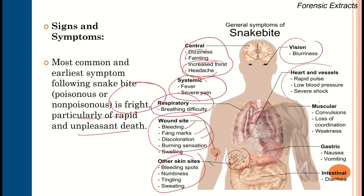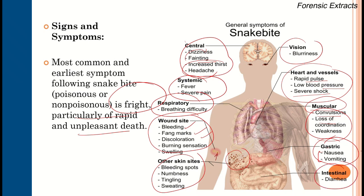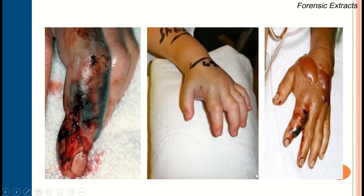Cardiovascular findings include rapid pulse and cardiac failure, leading to low blood pressure and severe shock. Muscular changes include convulsions, loss of coordination, and muscle weakness. Gastrointestinal symptoms include nausea, vomiting, and intestinal disturbances leading to diarrhea. These are the general signs and symptoms in any case of snake bite.